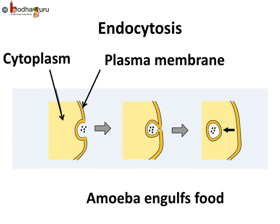How does amoeba acquire its food? The flexibility of plasma membrane enables the cell to engulf food and other substances from its external environment by a process called endocytosis. Endocytosis is a process in which a substance gains entry into the cell without actually passing through the cell membrane.